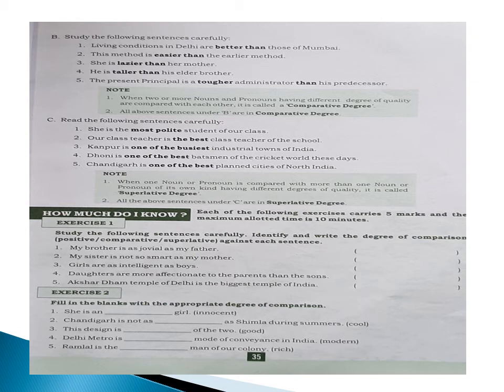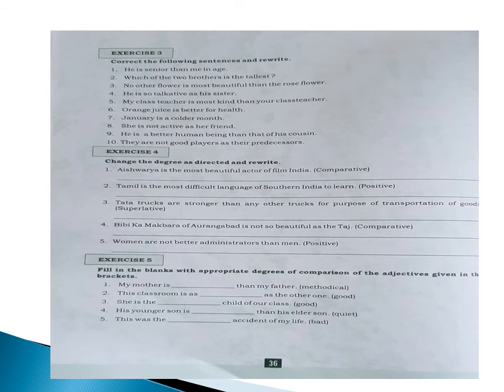Let us move forward to page number 36. See children, on page number 36 — correct the following sentences and rewrite them. We'll do a few. 'He is senior then me' — 'senior then' is incorrect. After 'then' we should use 'to,' so: 'He is senior to me in age.' Between 'than' and 'me' we have to use 'to.' Like this, all the sentences you have to correct. I'll give you notes and in those notes you will correct all the sentences.